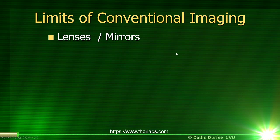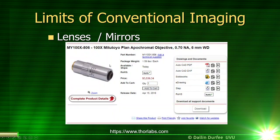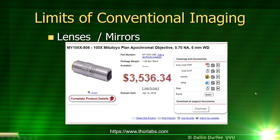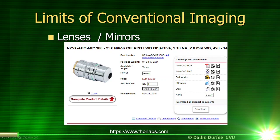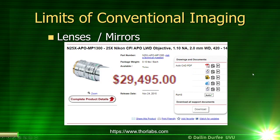Getting away from focusing lenses and mirrors is a big advantage of IPSI. For example, if you want a high numerical aperture lens for high-resolution imaging, it's going to cost you. Here's an off-the-shelf microscope objective that costs $3,500, and here's another for higher-resolution imaging — it's a $30,000 lens. Because IPSI does not require a high numerical aperture imaging lens, we can avoid that cost.